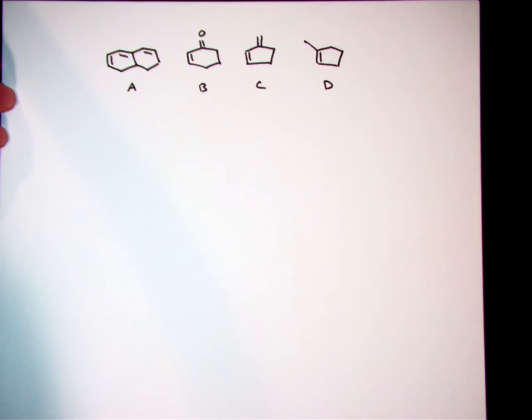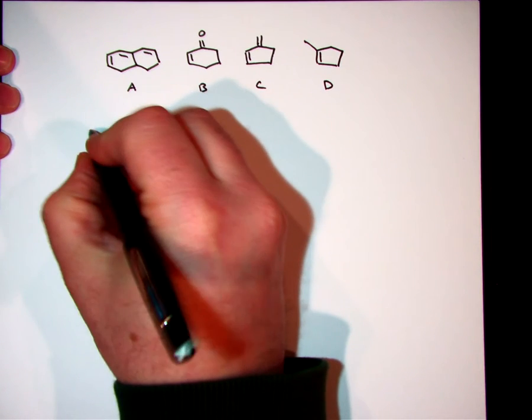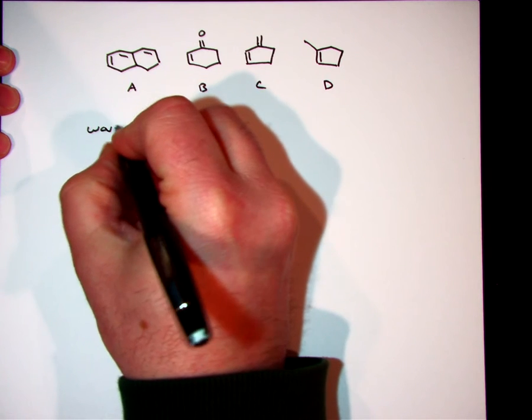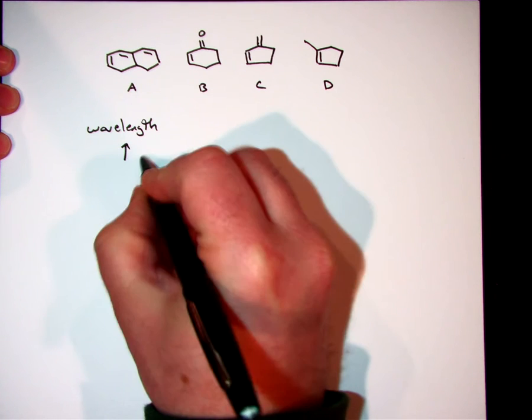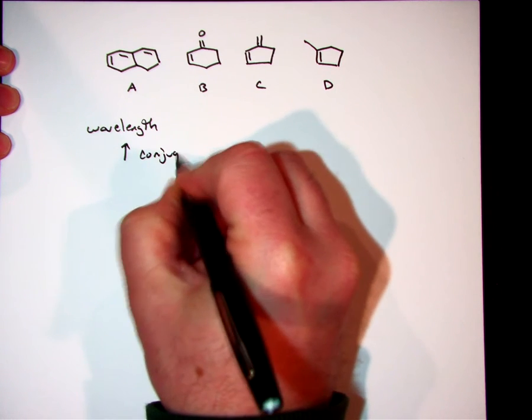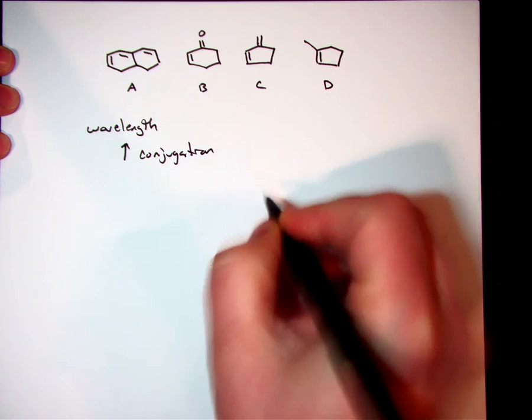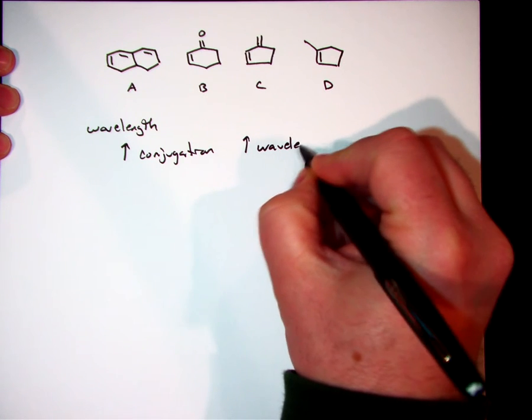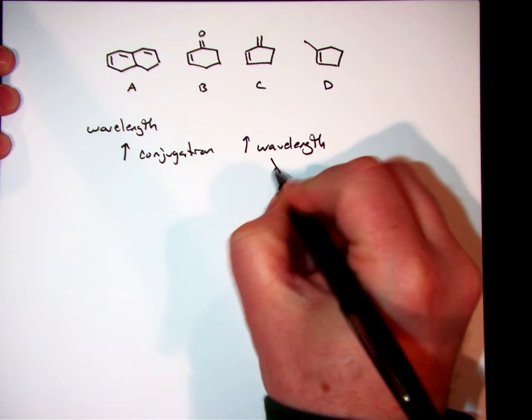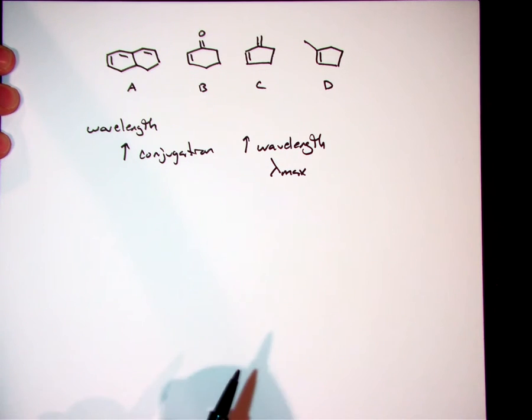Let's talk about how that relates to these different compounds. The first question talks about wavelength. What we find is when we have an increase in conjugation, we see a corresponding increase in the wavelength of absorption, or the lambda max that we're measuring for that particular compound.